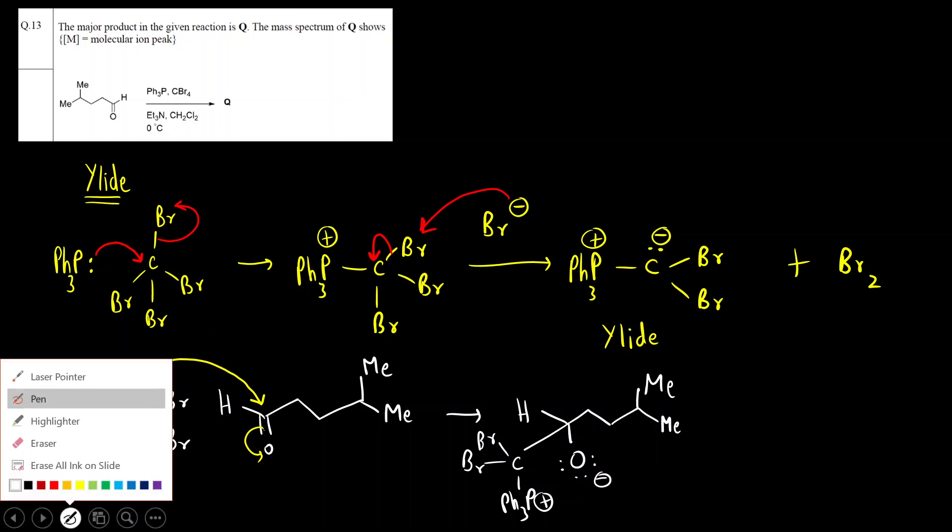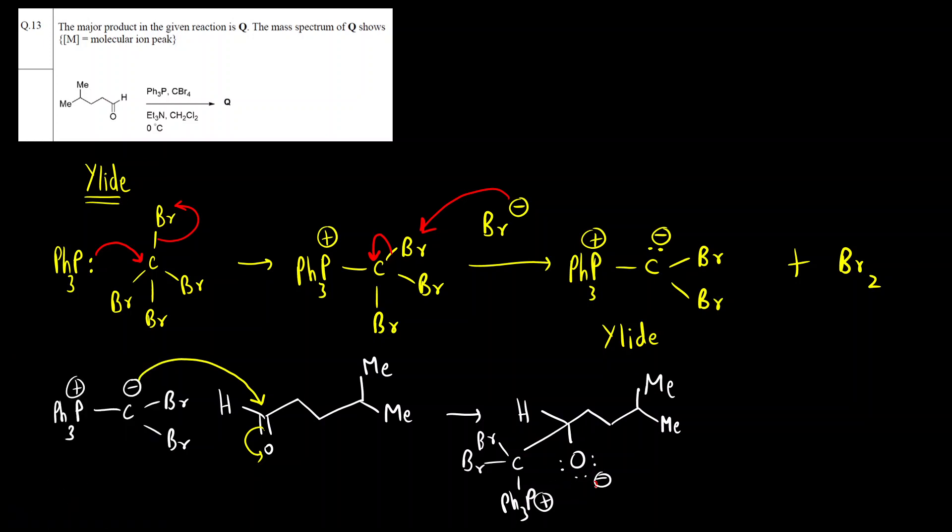Okay now what is the next step? Next step is formation of oxaphosphetene. Okay this will attack. What we will get? We will get a four-membered intermediate. Okay a four-membered ring. This is called as oxaphosphetene.